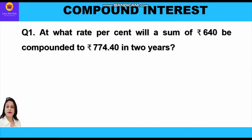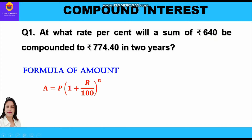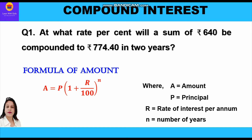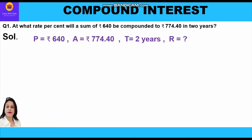We shall use the formula of amount: A is equal to P in bracket 1 plus r upon 100, whole raise to power n. We have three quantities given and shall find the fourth, that is rate of interest. Principal is rupees 640, amount is rupees 774.40, time period is two years, and rate of interest we have to find.